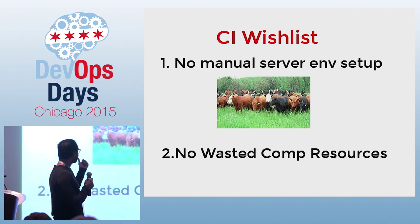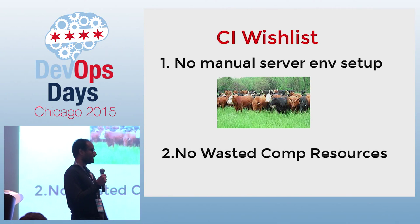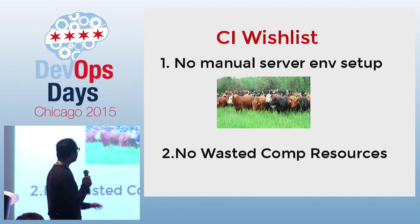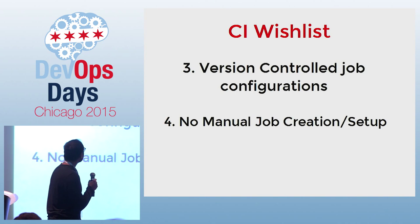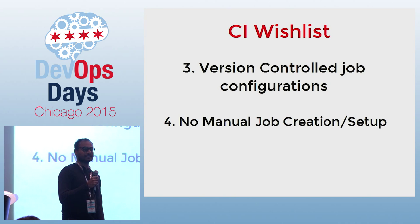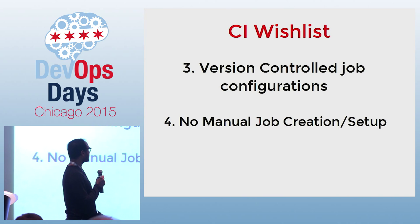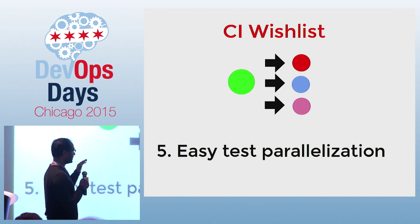This is my CI wish list. I want cattle instead of pets — I want all my servers with no manual environment setup, and I would like to use my resources properly. I also want to version control my job configurations, treat them as source code, and get the same advantages. And I don't want to be in the business of creating jobs manually.